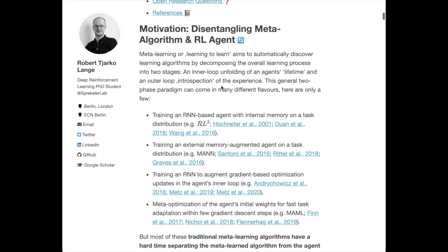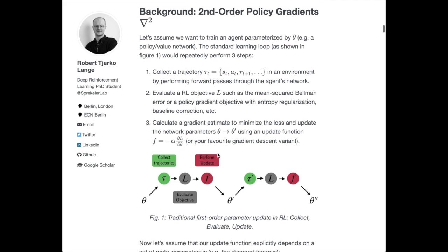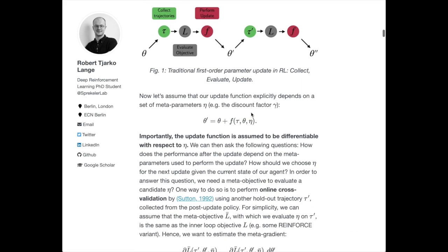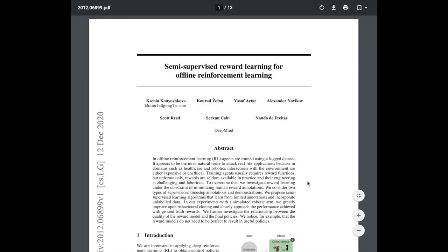This survey takes you through several approaches to outer-inner loop optimization, second-order policy gradients, and how we can look at theta-primes and sampled trajectories to tackle meta-learning problems that design architectures, learn optimizers themselves, or do differentiable data augmentation.